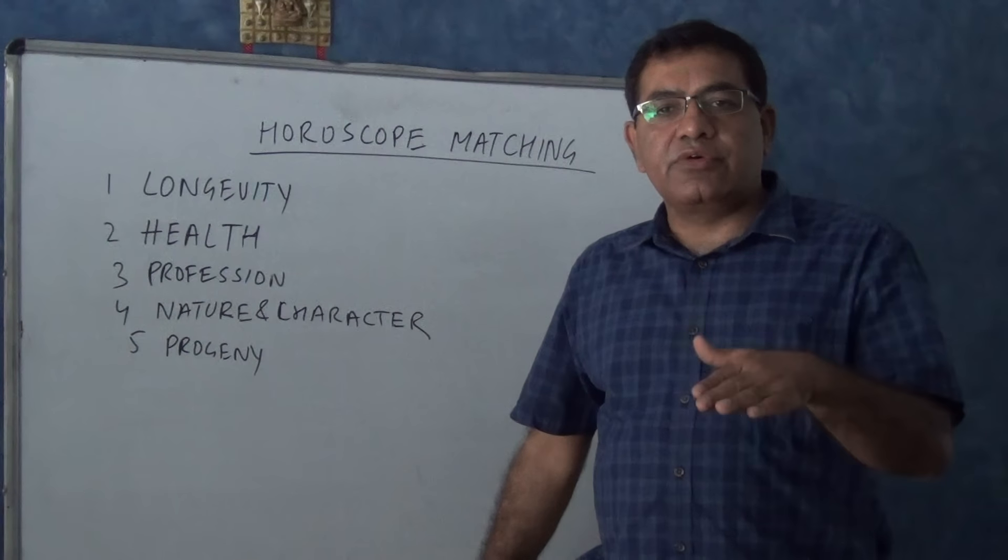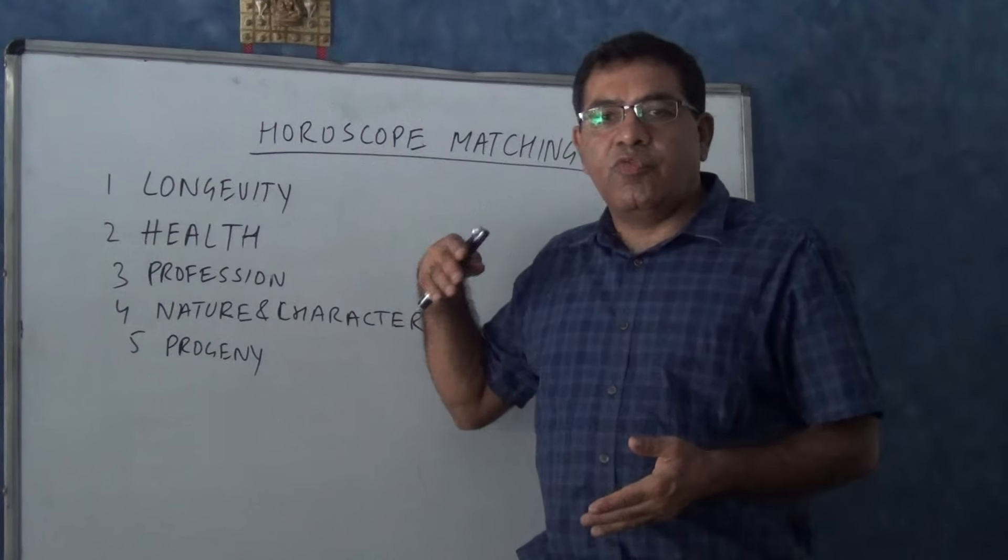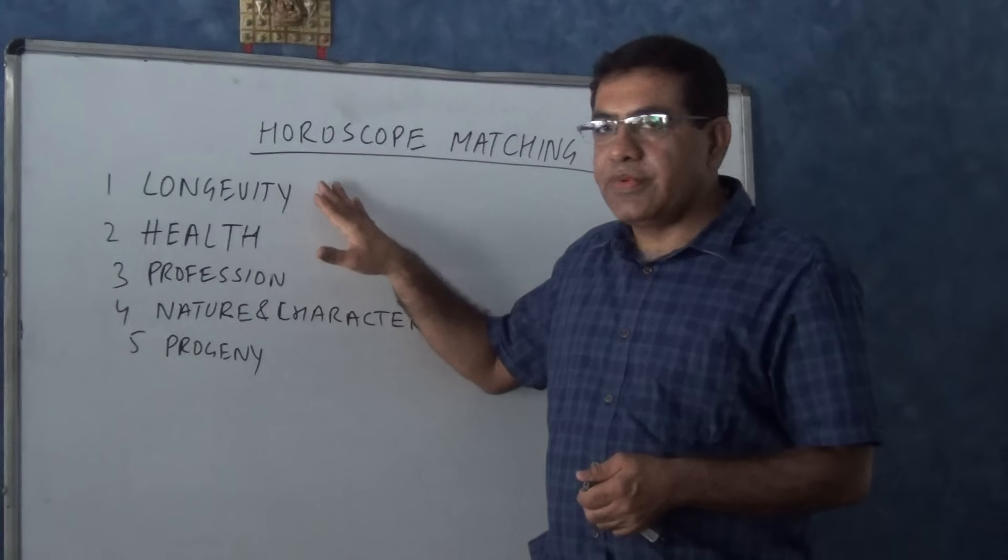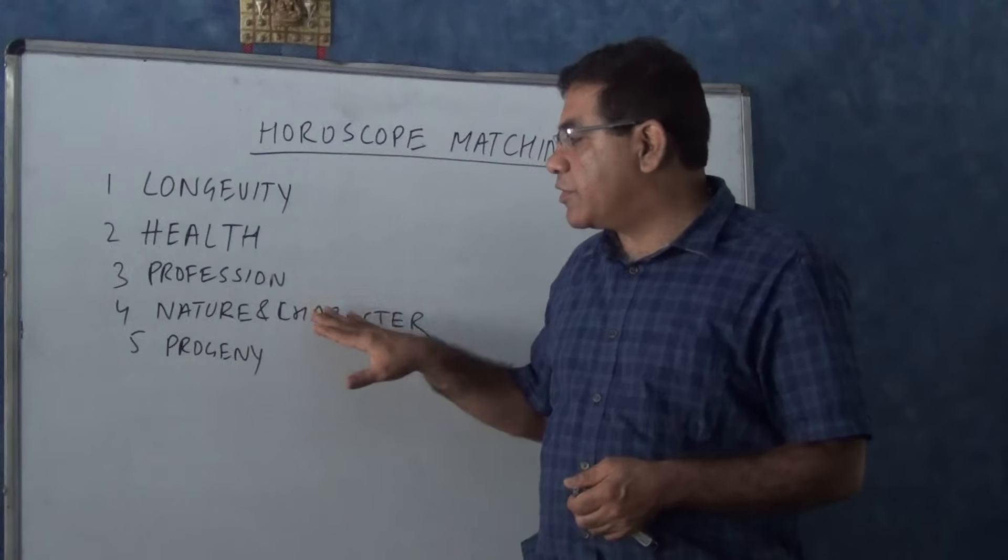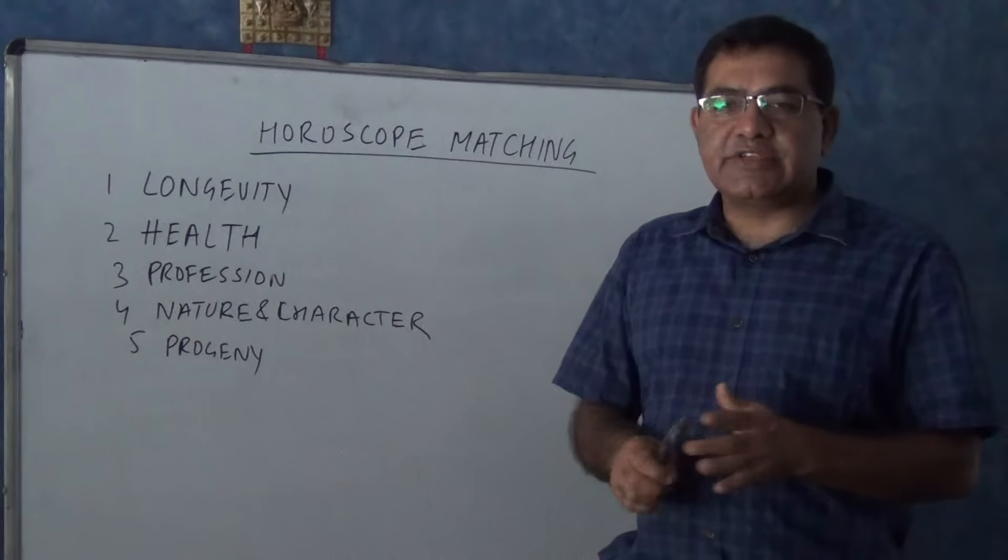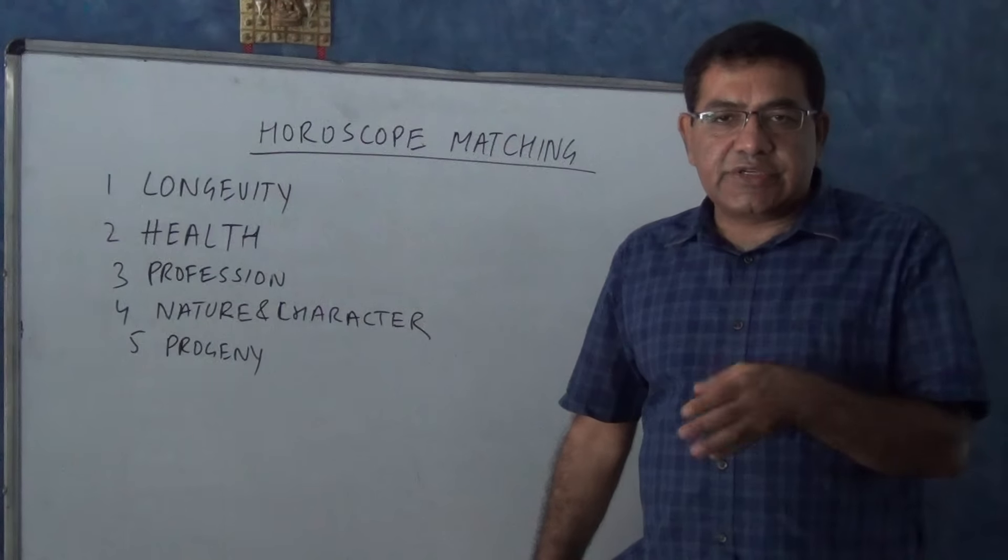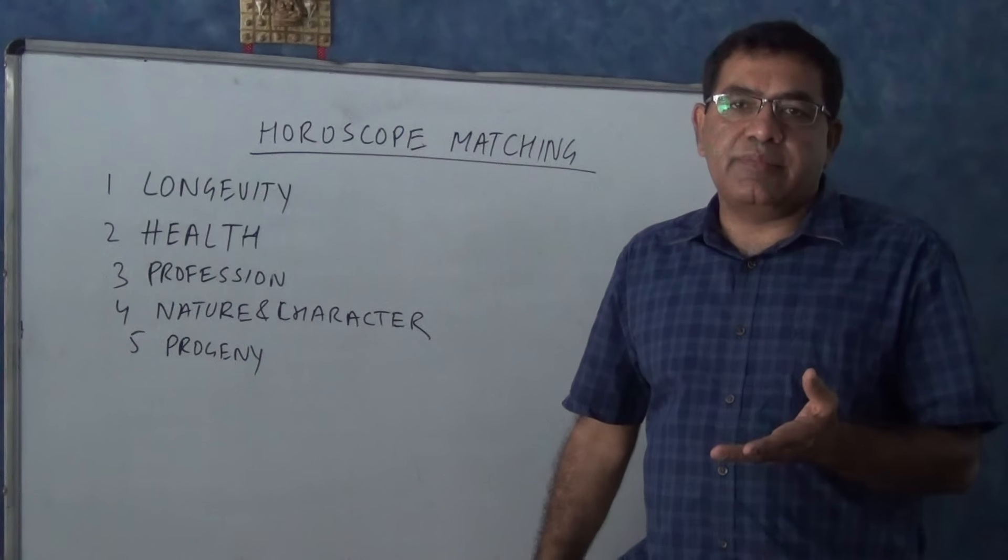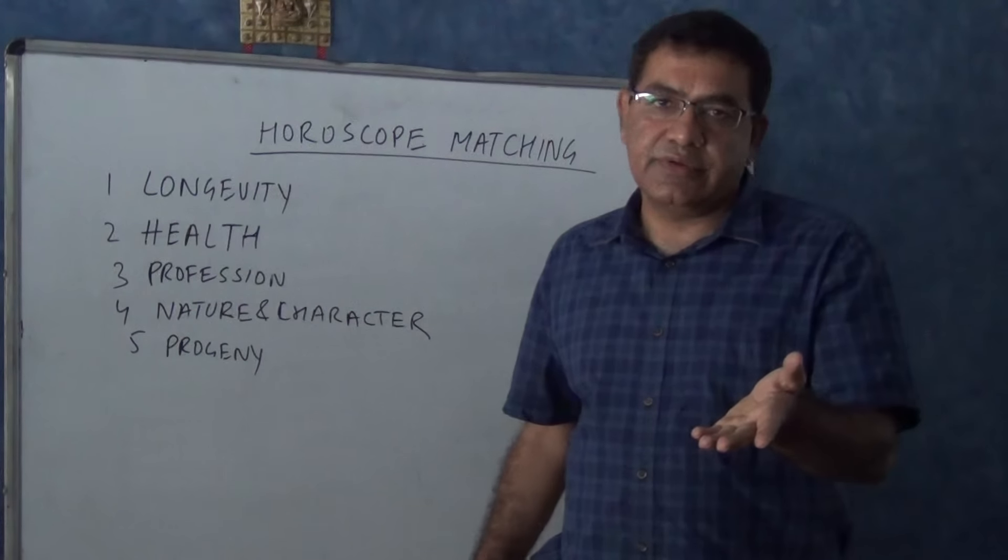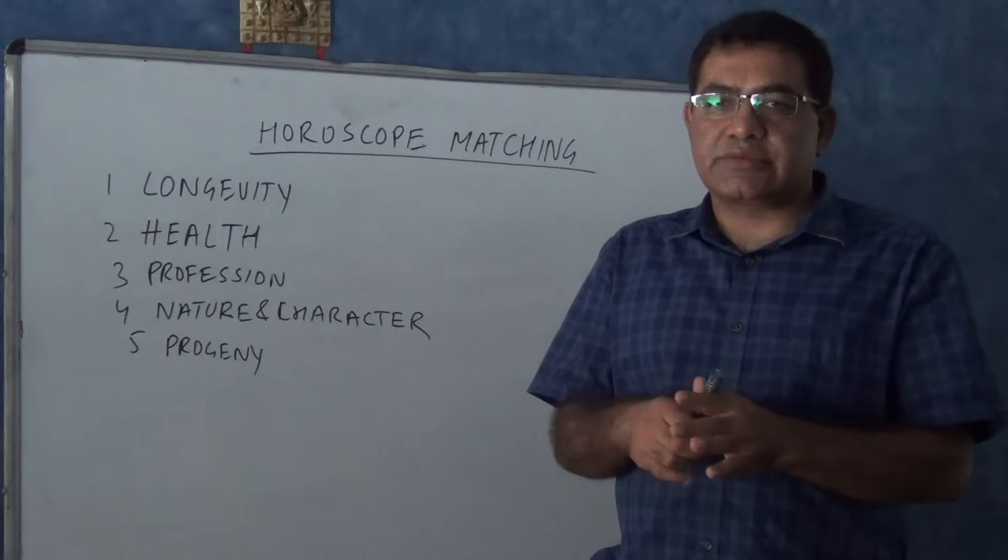Same way if we want to marry our son or brother, the would-be wife or the girl in question should have long life, good health, she should have good profession, she should have good nature and she should have good character as well as progeny. What is the nature of my son or my brother doesn't make much of a difference. It is the girl which is coming in our family that should be good. And we have to see all the planets. If majority of the planets are good, it is okay.